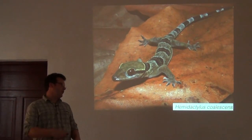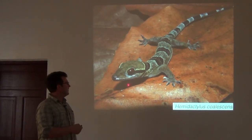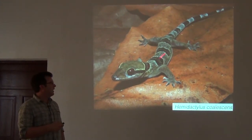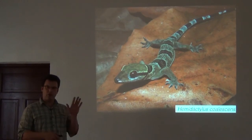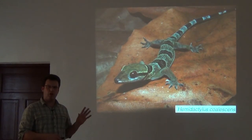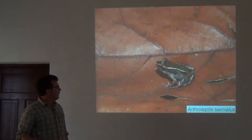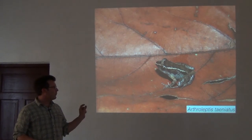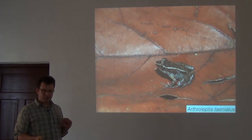Hemidactylus coalescens — what used to be called fasciatus — are good-sized, medium to large geckos that live on large trunks of trees in the forest. There are also very small leaf litter frogs that are little brown frogs, like Arthroleptus, which I spend a lot of time on.